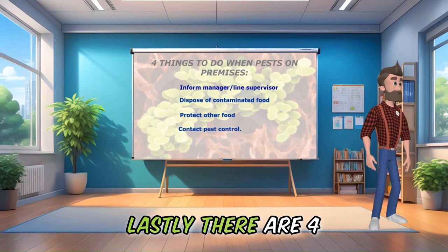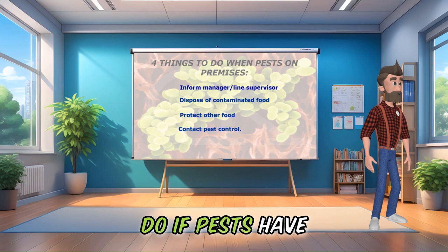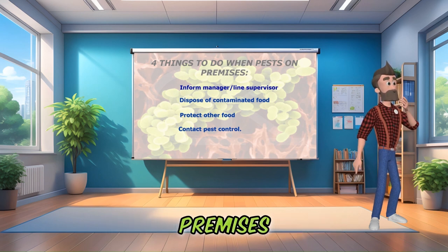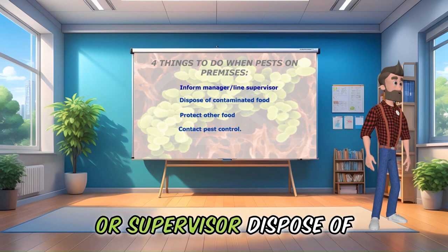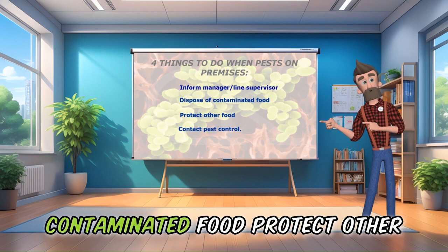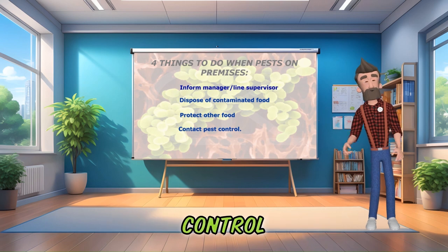Lastly, there are four things that you must do if pests have been recognized on the premises: inform your line manager or supervisor, dispose of contaminated food, protect other food, and contact pest control.